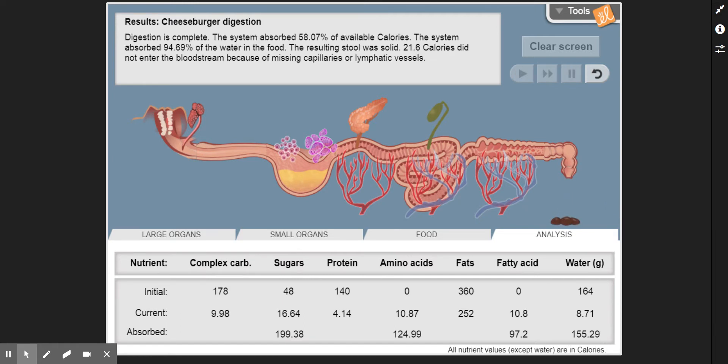And as we look at our analysis at the end of it, we see 58% of the calories were absorbed, 94.69% of the water was absorbed, solid stool, and 21.6 calories did not enter the bloodstream because of missing capillaries or lymphatic vessels. So we've set this one up and we can experiment and see how it can be fixed.